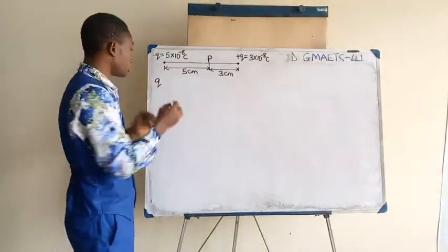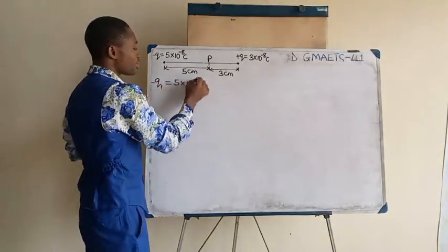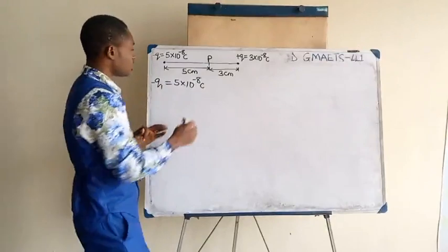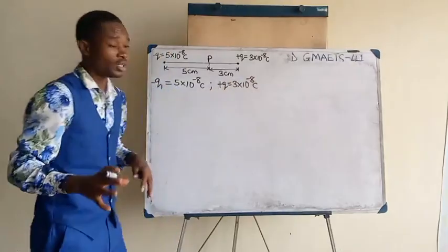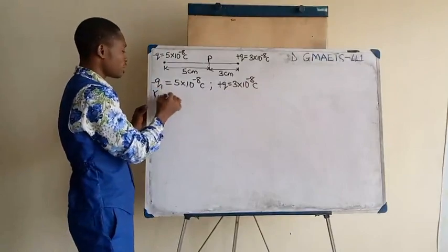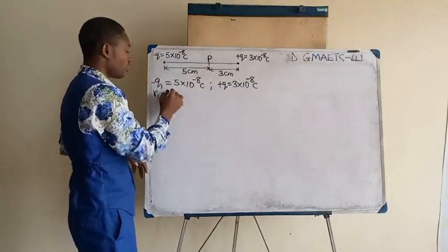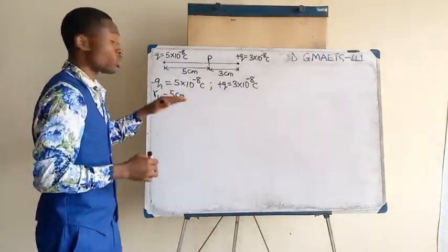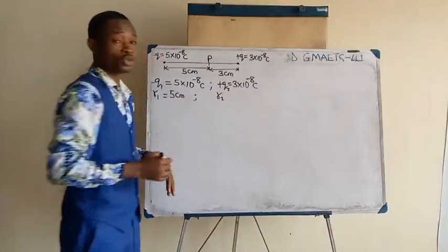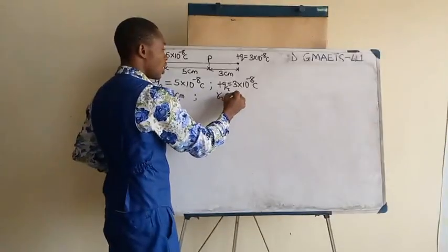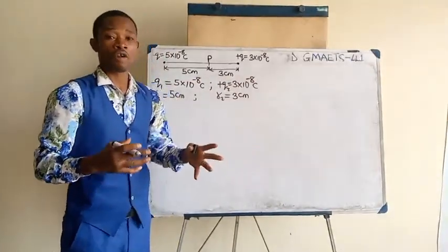Strategically, let us see how we approach the problem. First, let us define our parameters. Here we have the first charge is negative, let me call that Q1, and that is 5 times 10 to the power of minus 8 Coulombs. We have the second charge, positive Q2, which is 3 times 10 to the power of minus 8 Coulombs. Then the distance, let me use R1 for this, the distance of the negative charge from point P is 5 cm. Then R2, the distance from Q2, is equal to 3 cm.